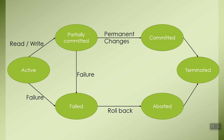If by mistake some transaction has been carried out which was not supposed to, and you want to undo that, rollback is not going to work. What we'll have to do is construct another transaction which is going to carry out exactly the reverse operation. For example, if a transaction has credited $20 to account A but which was not expected, that was a wrong transaction and we want those changes to be rolled back.